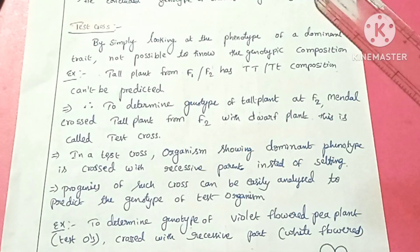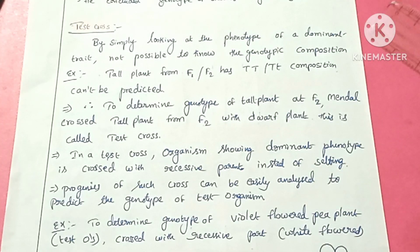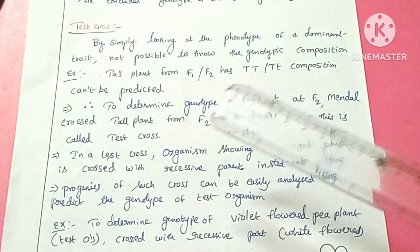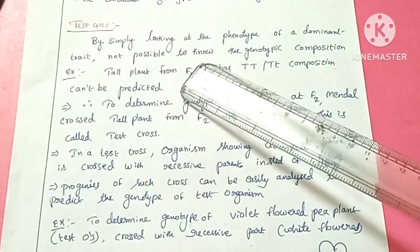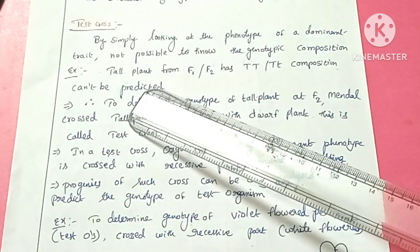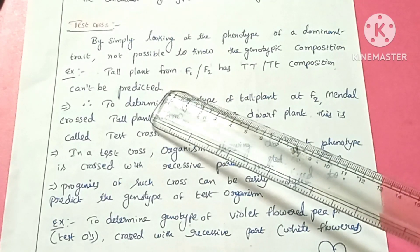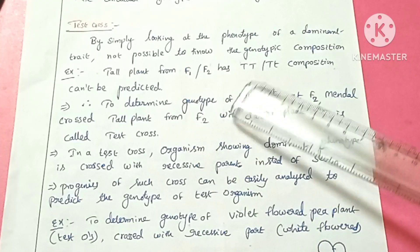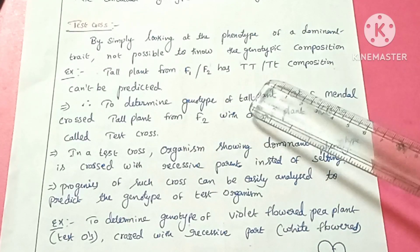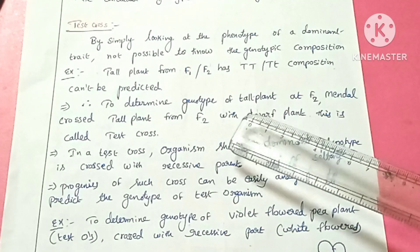Hello everyone, this is Latha Akula. In this video we are going to study about test cross. Phenotype means by simply looking at the organism we can see the condition of the plant, but you cannot determine by simply looking at the phenotype of a dominant trait whether the genotype composition is homozygous or heterozygous. For example, tall plants in F1 and F2 generation can have either TT or Tt genotype.